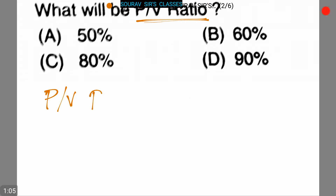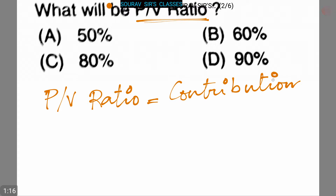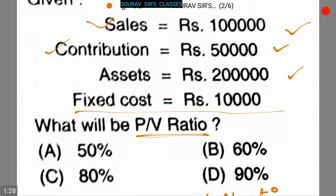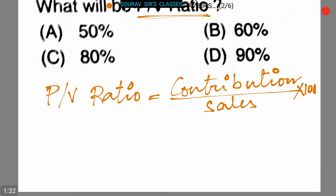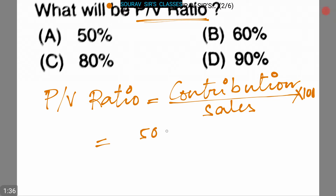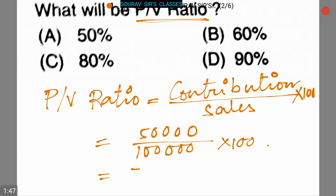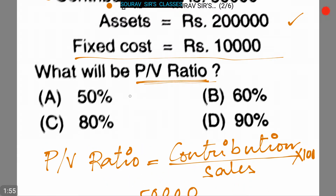PV ratio is equal to contribution divided by sales into 100. Putting the values of contribution and sales, that is Rs. 50,000 and Rs. 1 lakh respectively, we can write it as 50,000 by 1,00,000 into 100. This is equal to 50%. So the PV ratio is 50%, that is Option A. Option A is our correct answer.